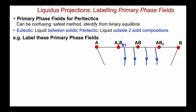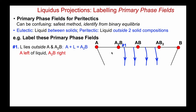So let's use that simple principle on the following example. Now in my AB binary, I have three intermediate compounds shown, and each one has introduced an additional liquid valley — so I have four valleys and five compounds, giving five primary phase fields. Let's make sure we can label them correctly. For number one, the liquid lies outside — to the right — of A and A₂B, so this must be a peritectic reaction: liquid plus A in equilibrium with A₂B. So the primary phase field of A is to the left of the liquid, and the primary phase field of A₂B is to the right.